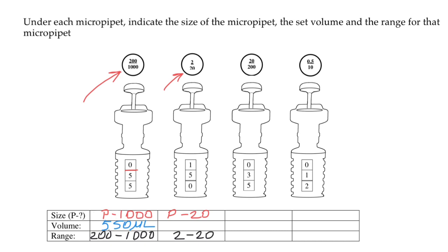Again, this double line here, or the line which I'm showing with red color, means decimal point. So actually we have here 15.0 microliters.